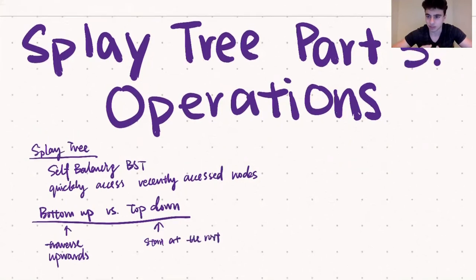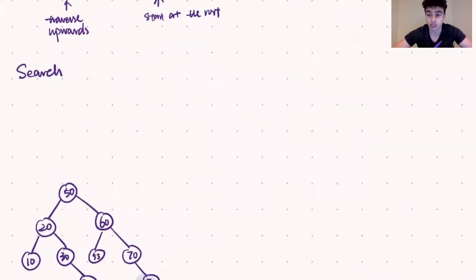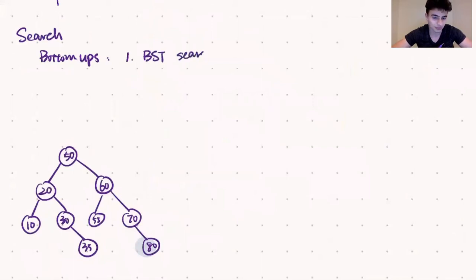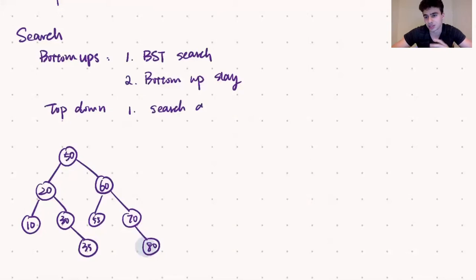After that quick recap, we can now start to talk about the operations. If you want to learn more about bottom-up versus top-down splays and their differences, you can click the title card in the right-hand corner to view our video on that. We're going to assume that you saw that. So let's first talk about search. Searching using bottom-up splay basically works by first performing a binary search tree search, and then after we find the node that we want, we use the bottom-up splay algorithm to splay that node to the root. On the other hand, search for top-down splay works by searching and splaying simultaneously, because we're starting from the root anyway.